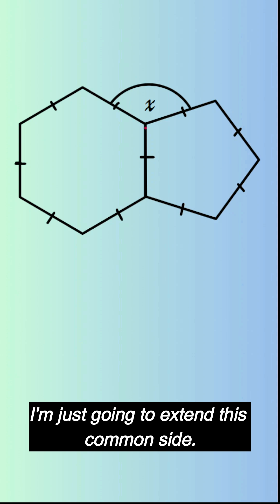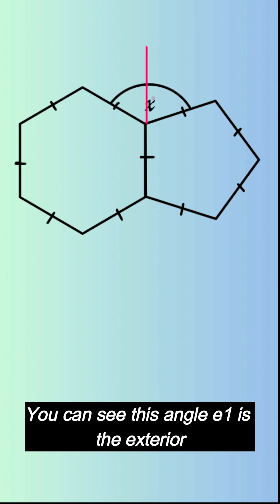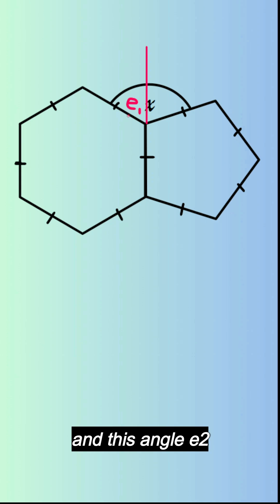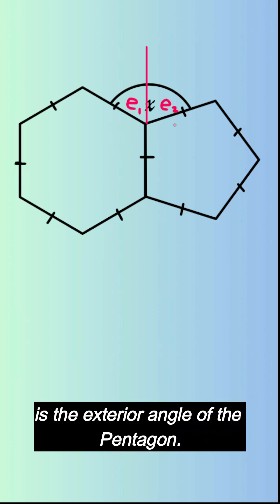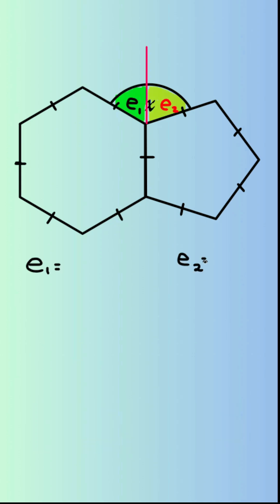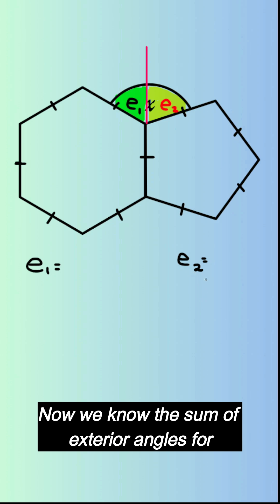I'm just going to extend this common side. You can see this angle e1 is the exterior angle of the hexagon and this angle e2 is the exterior angle of the pentagon. Now we know the sum of exterior angles for each polygon is 360 degrees.